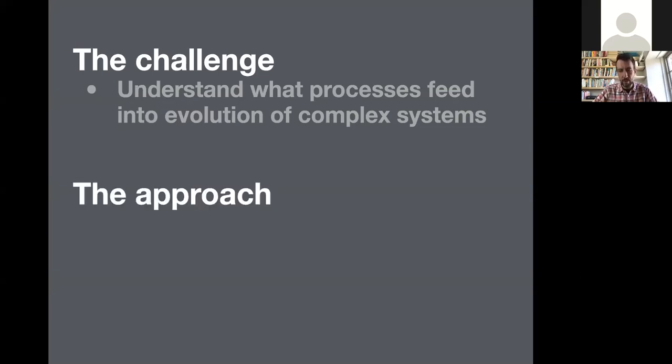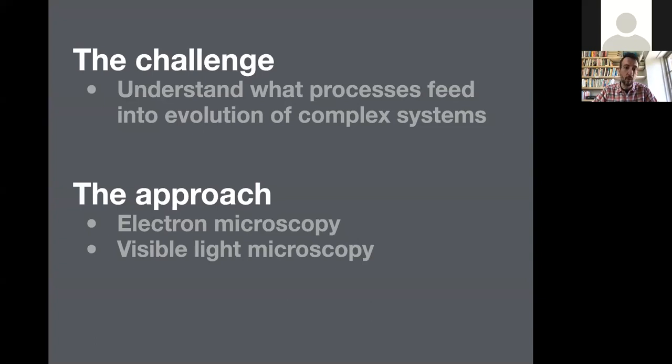The approach we use as experimental biologists is electron microscopy to get 3D images of the things we're most interested in. I'm a very visual person, so it's important for me to use a visual approach. We're also supplementing this with visible light microscopy and stitching all of this together with hypothesis-driven genetic manipulation to understand some of the basic processes of the biological systems we're studying.